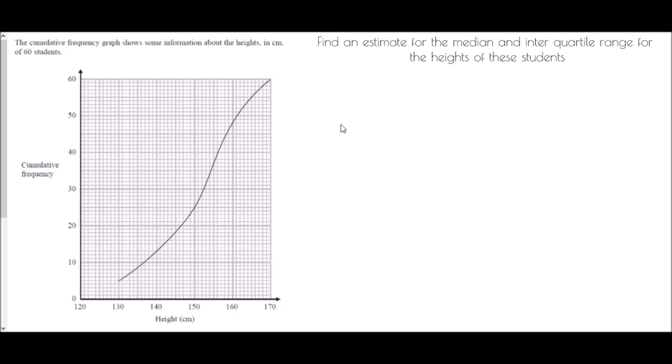Now we're going to actually use the cumulative frequency diagram to read some values from it. We've been told that the cumulative frequency graph shows information about the heights in centimetres of 60 students, and we're going to find an estimate for the median and interquartile range for the heights of these students.